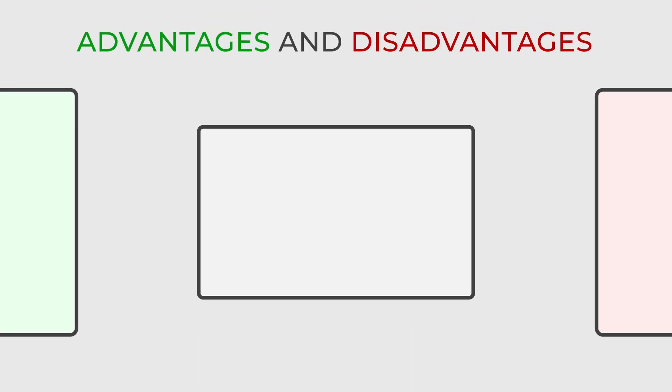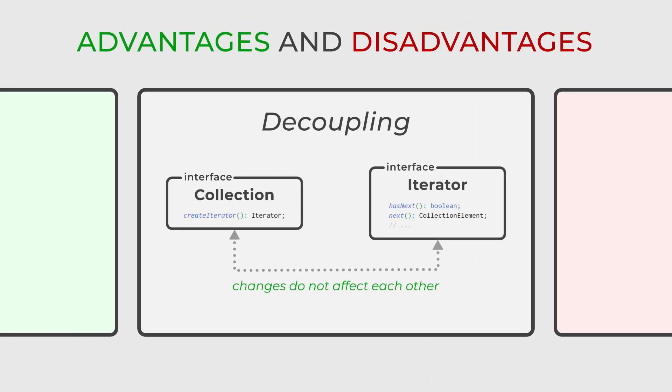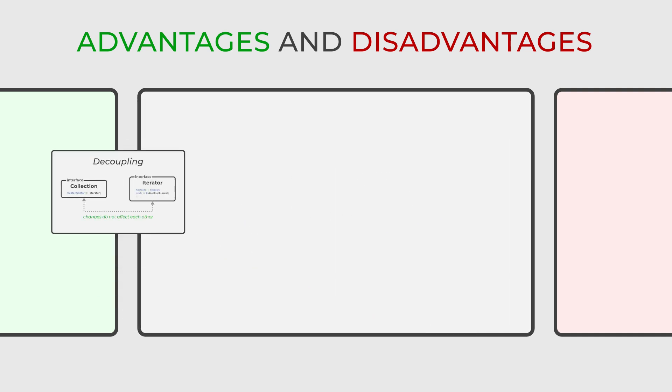Starting with the benefits, the iterator introduces a notable level of decoupling, effectively separating the traversal logic from the collection and ensuring a clean division of responsibilities. This separation enhances the maintainability and scalability of the code, as changes in the traversal logic or the collection structure do not affect each other.